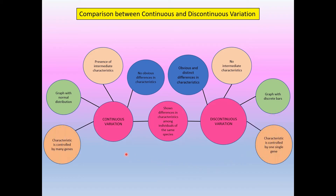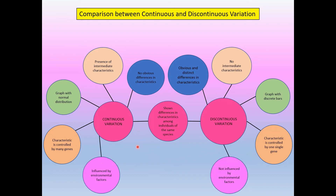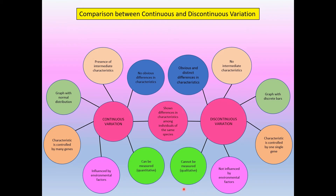Differences continued — number four: for continuous variation, the characteristic is controlled by many genes; for discontinuous variation, the characteristic is controlled by one single gene. Number five: continuous variation is influenced by environmental factor, whereas discontinuous variation is not influenced by environmental factor. Number six: continuous variation can be measured, so it is quantitative; discontinuous variation cannot be measured, so it is qualitative.